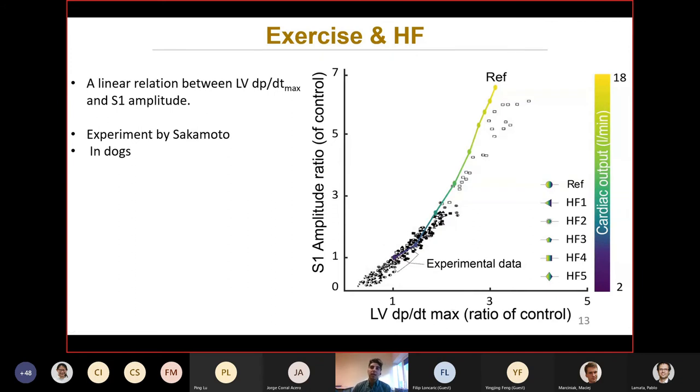This figure, the black dots are experimental data done by Sakamoto in dogs. They did infusion of drugs to get various conditions. And they got this linear relation between S1 amplitude ratio of control and LV dP/dt max. And this line is our reference data from simulation. As we increase the severity of heart failure, we see that we have a reduction in LV dP/dt max and also S1 amplitude.